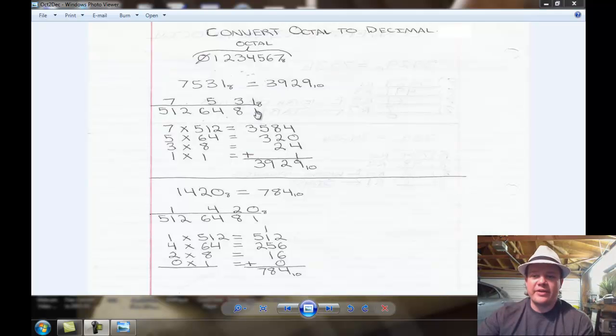In base 8 number system, instead of having 1, 10, 100, you have 1, 8, 64, and 512. These are powers of 8. If you're not familiar with powers, that's okay. Just basically it's this. It's very simple. It's 1, 8, and then 8 times 8 is 64, and 64 times 8 is 512, and 512 times 8, and so on. That's how you do it.